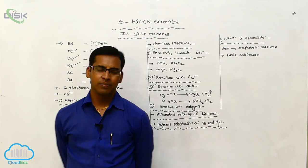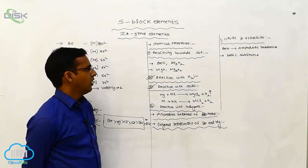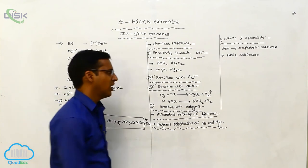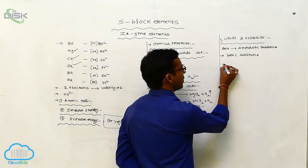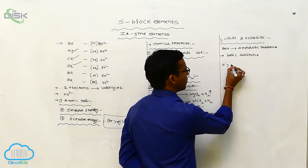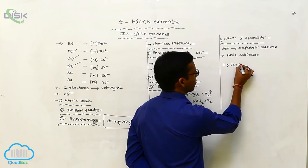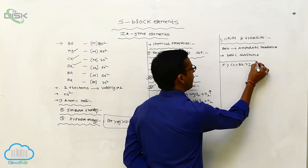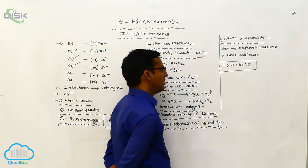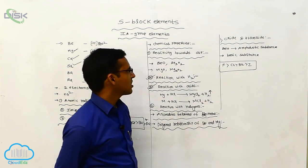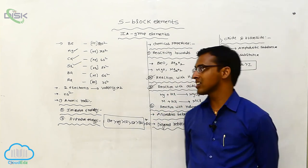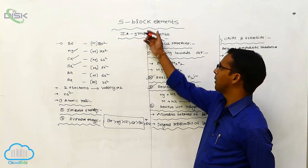Regarding halogen reactivity, fluorine is more reactive than chlorine, chlorine is more reactive than bromine, and bromine is more reactive than iodine. These are the general characteristics of Group 2A elements.